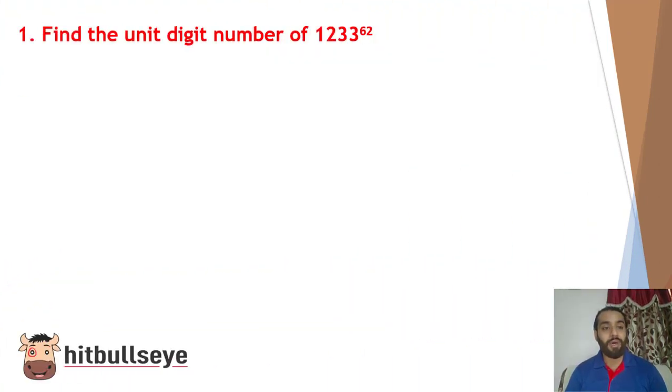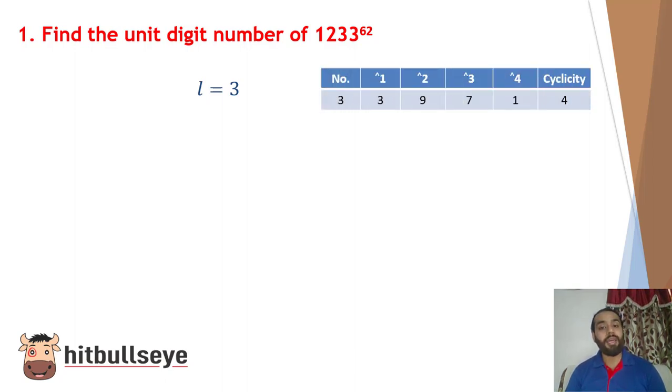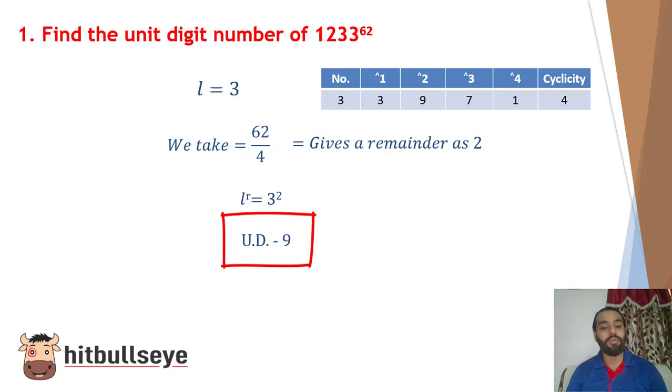Let's start with some questions now. Question 1: find the unit digit of number 1233 raised to the power 62. Now we know that here the unit digit is 3. With the table, referring to the table, we can note that the cyclicity of 3 is 4. So what do we have to do? Some students might think to leave this question or try different tricks. But the simplest trick would be: take the whole expression's power, that is 62, and divide it by the cyclicity of the unit digit, that is 4. So when we do this, we get a remainder as 2. So now we know that if we have 2 as a remainder, by the formula or trick, we can easily write it as L raised to the power R, which will give us 3 raised to the power 2, and you can easily come to the conclusion as 9. So 9 will be the unit digit of this expression.